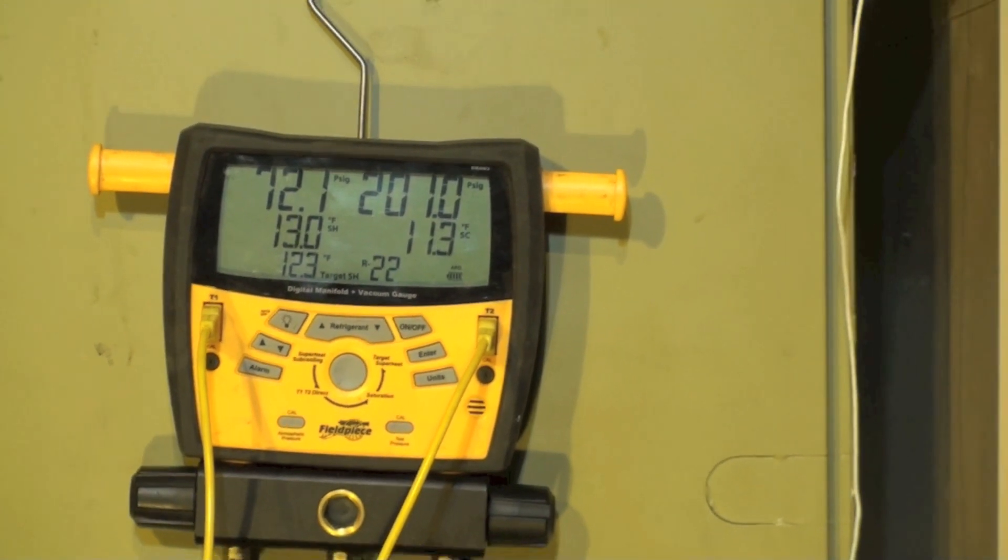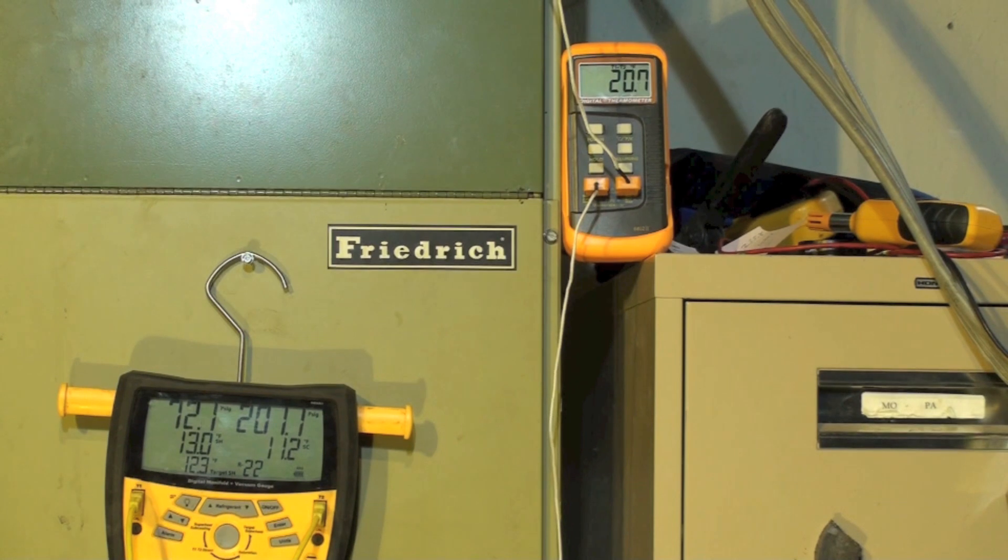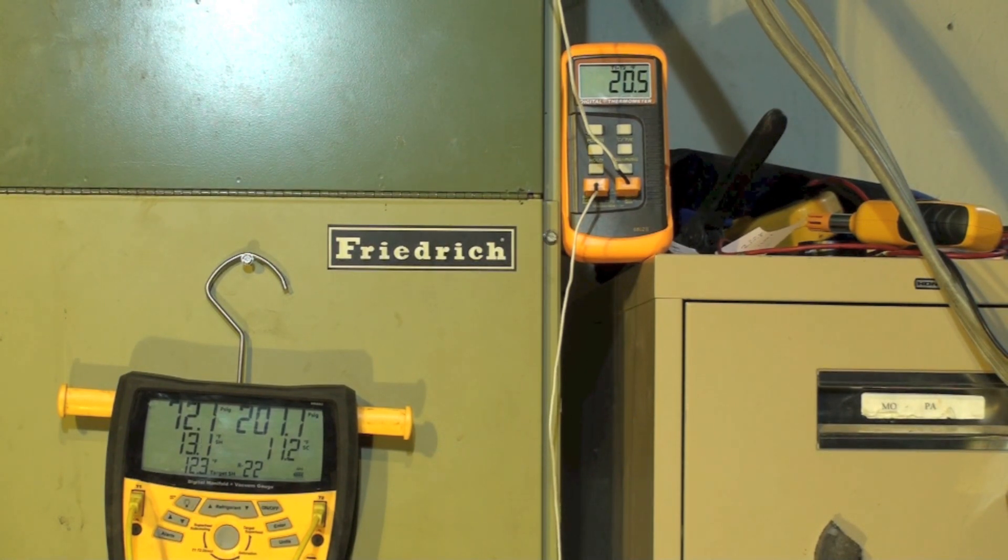Let's also look at the temperature across the coil. Our temperature across the coil is 20.8 or 20.5, whichever. Anyway, that's about where it should be. And so the unit was low on charge, that was the problem.